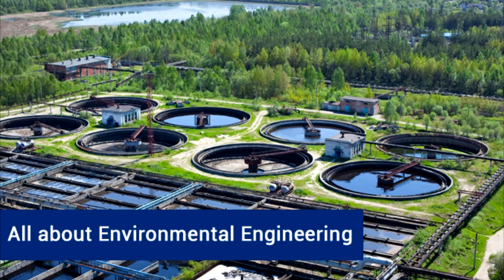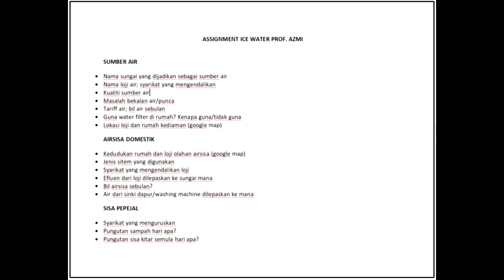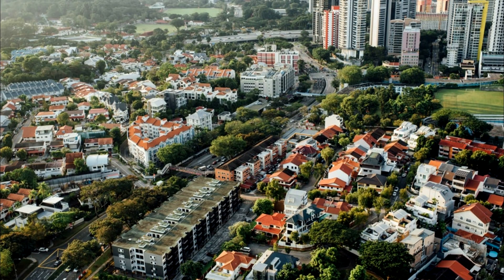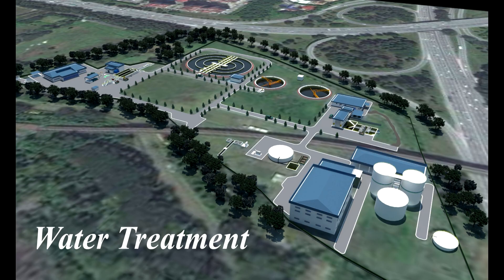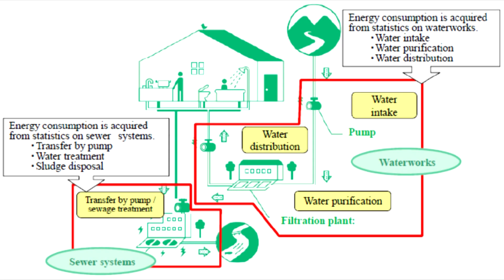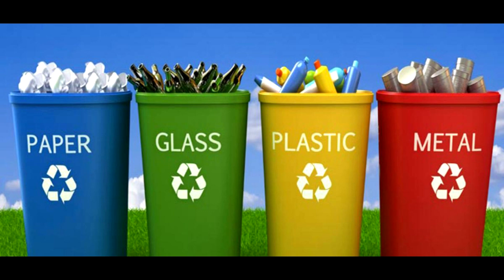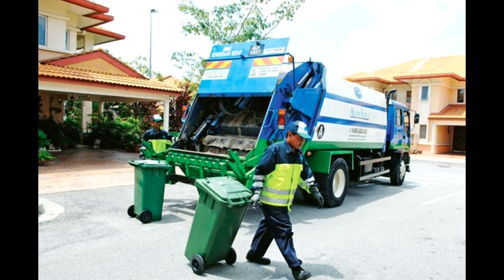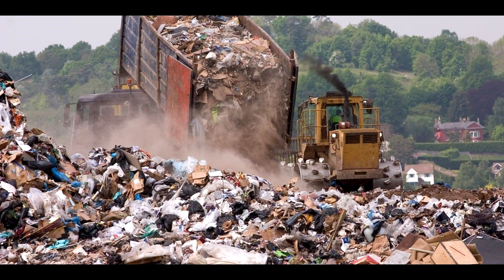The environmental engineering assignment is done by K2 students. They need to answer questions about the source of water, domestic water waste, and management of solid waste based on their neighborhood. They need to know their home's water source, the nearest water treatment plant, and water cost. For domestic water waste, they should know the system used and where wastewater from sinks or washing machines goes. For solid waste, they find out when workers collect rubbish at their house.